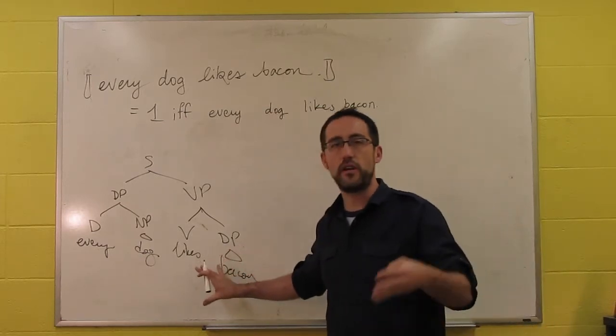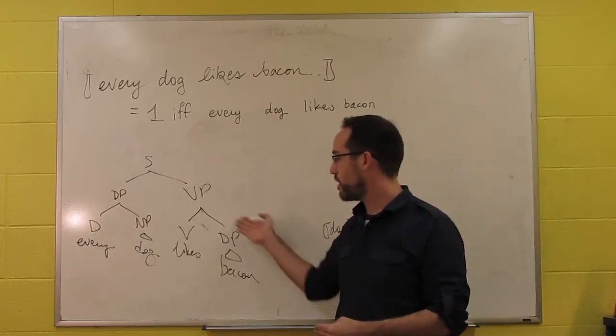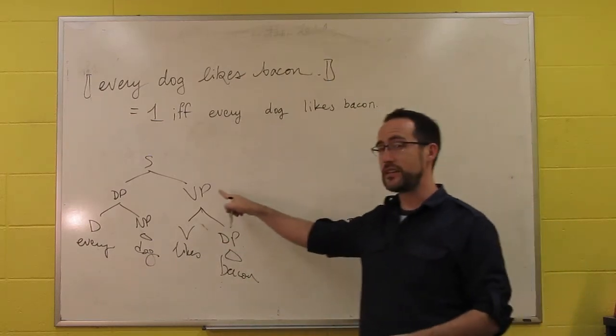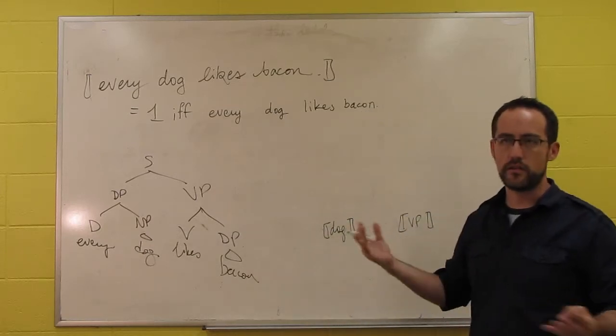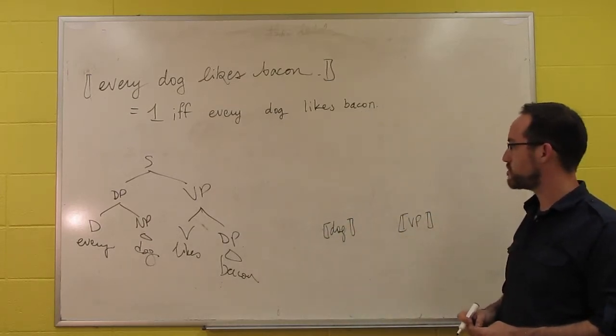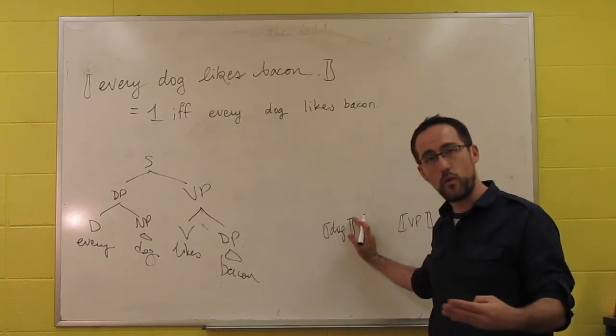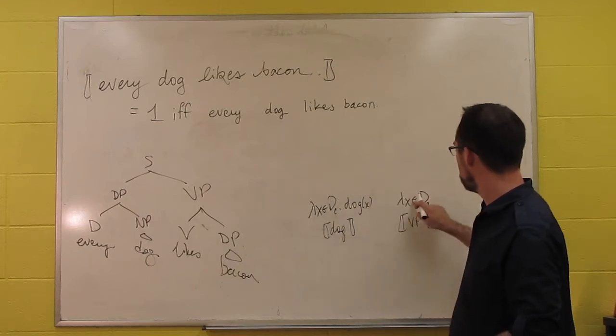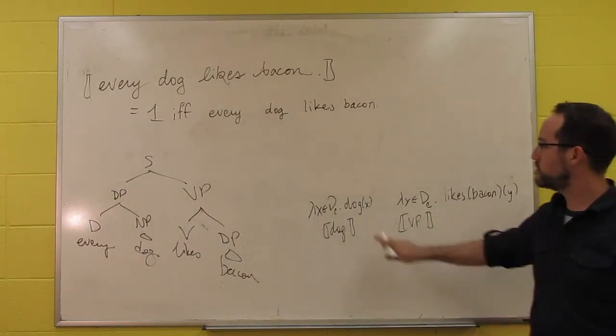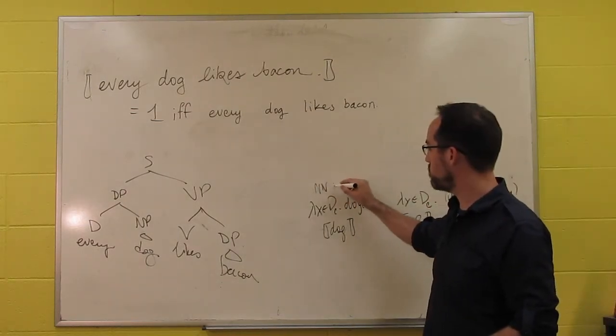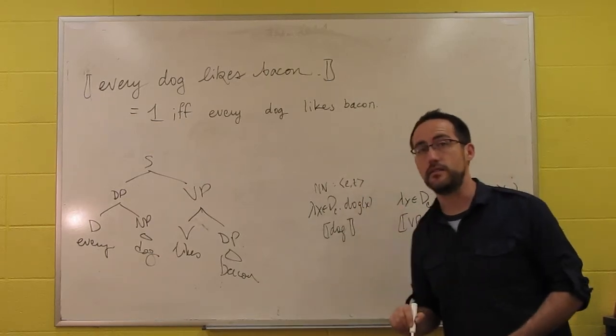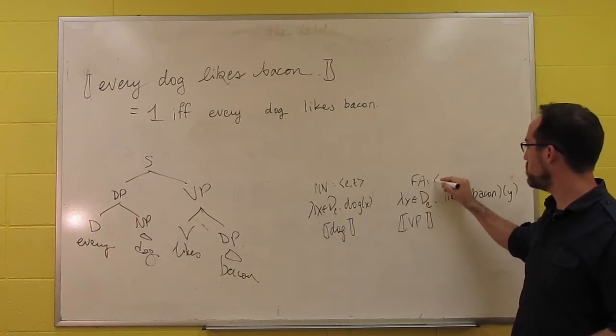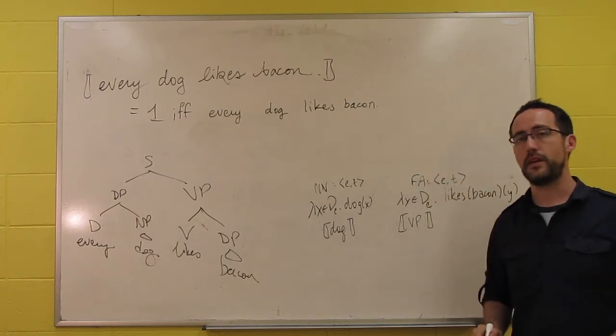We know what the meaning of likes bacon is. If we assume that bacon is the name of type E, we plug it into likes, and we get the meaning of the VP likes bacon to be the set of things that like bacon. The meaning of dog is the set of dogs or the function that gets us the set of dogs. We built it through non-branching nodes, and it's of type ET. Liking bacon, we built through functional application. It's also of type ET.